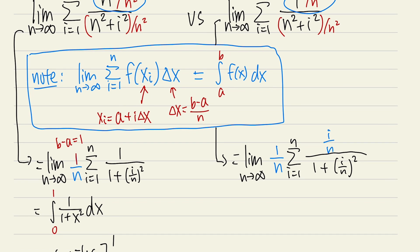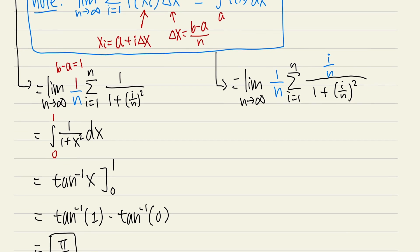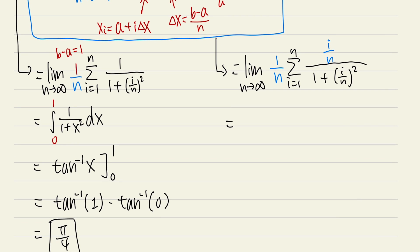Pay attention to the i/n part — that gives us x. We have 1/n out front, so b − a = 1, and we start from 0. This is the integral from 0 to 1 of x/(1 + x²) dx.